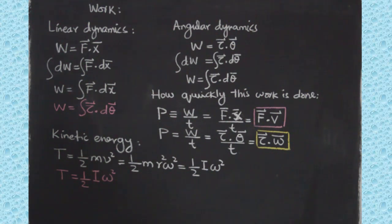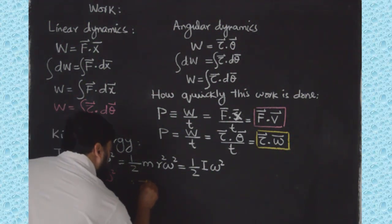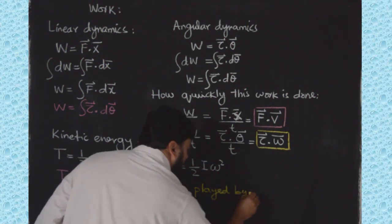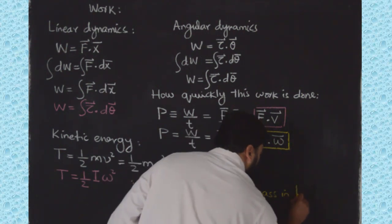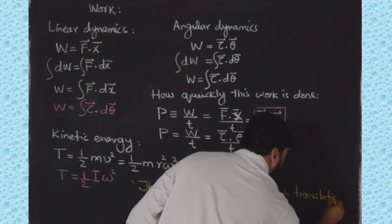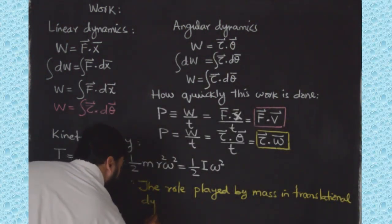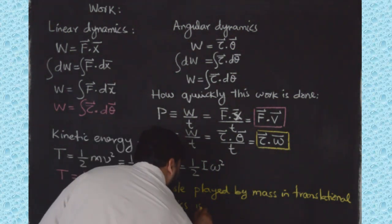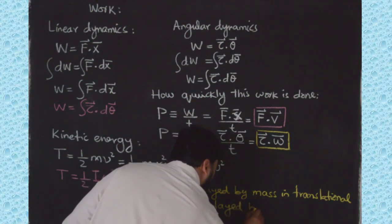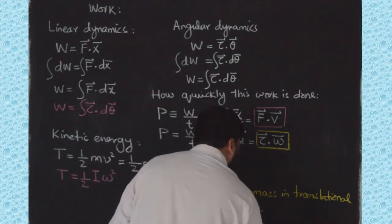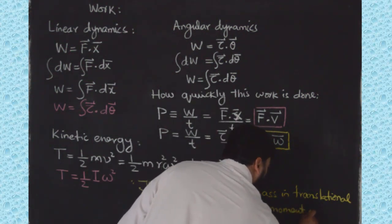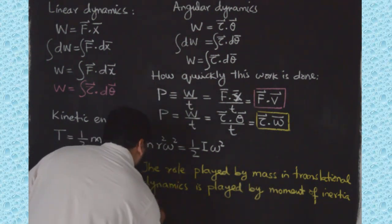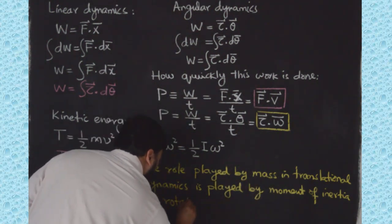So we can conclude that the role played by mass in translational dynamics is played by moment of inertia in rotational angular dynamics. This is the key difference in terminologies between translational and rotational dynamics.